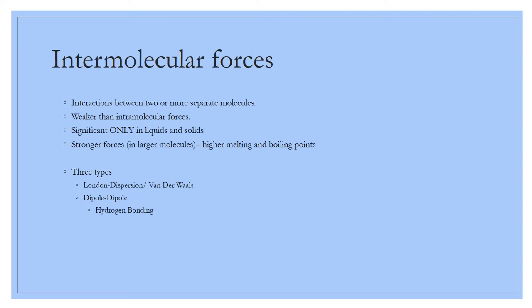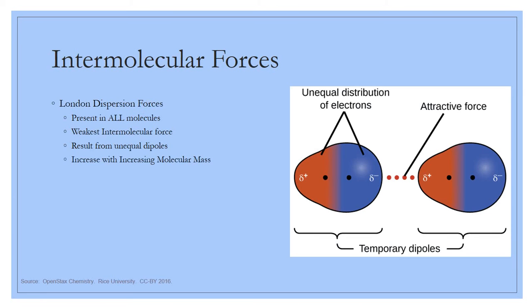The stronger the intermolecular forces, the higher the melting point and boiling point. That allows us to make predictions about properties just by looking at which types of intermolecular forces are present. Listed from weak to strong: the weakest is London dispersion — sometimes still called Van der Waals forces, interchangeable terms. Then there's dipole-dipole forces, which are stronger. The strongest type of dipole-dipole force is hydrogen bonding.